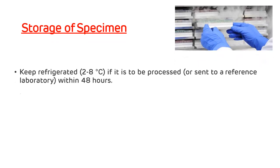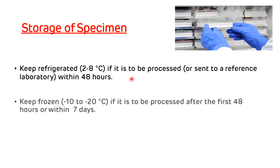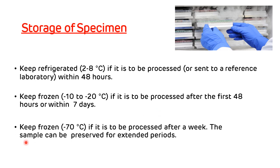For storage of specimens: keep refrigerated at 2 to 8 degrees Centigrade if the sample is to be processed within 48 hours. Keep frozen at minus 10 to minus 20 degrees Centigrade if it is to be processed after the first 48 hours and within seven days. Keep frozen at minus 70 degrees Centigrade if it is to be processed after a week, for extended preservation.